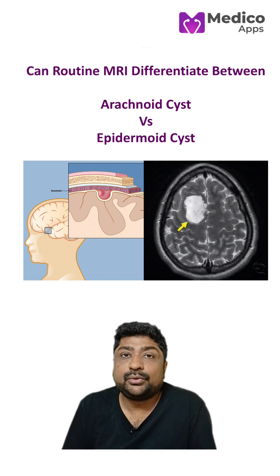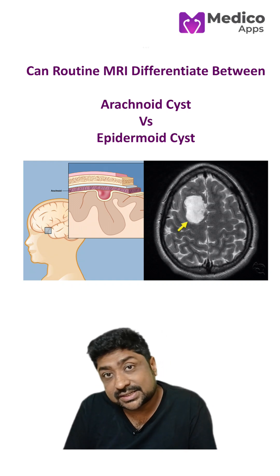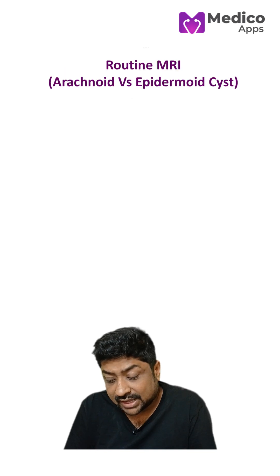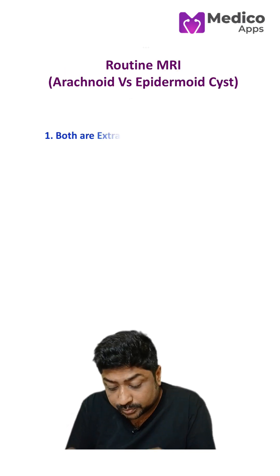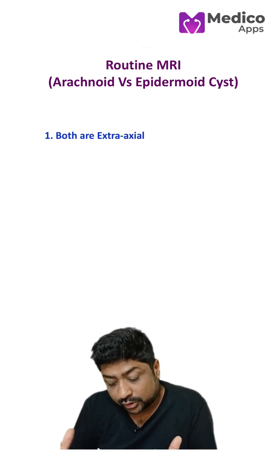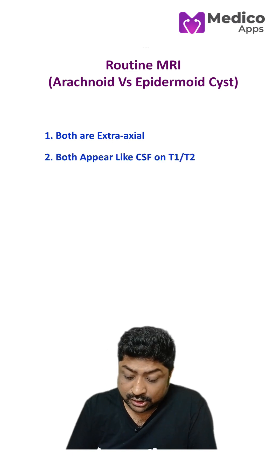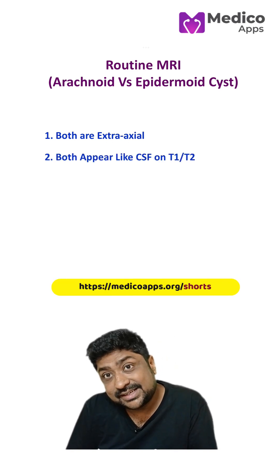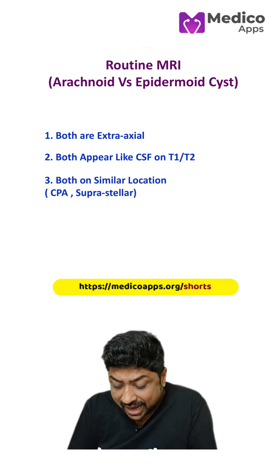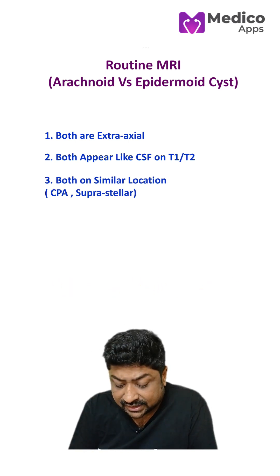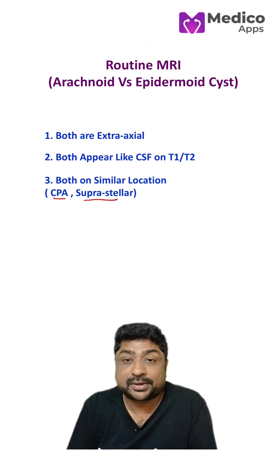Can you use a routine MRI to differentiate between arachnoid cyst and epidermoid cyst? The answer is no. Because both of them, due to their location, are extra-axial. Both appear like CSF on both T1 and T2, and both occur in similar locations, like the cerebropontine angle or suprasellar region.